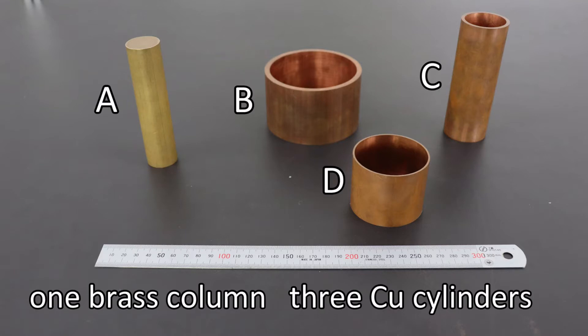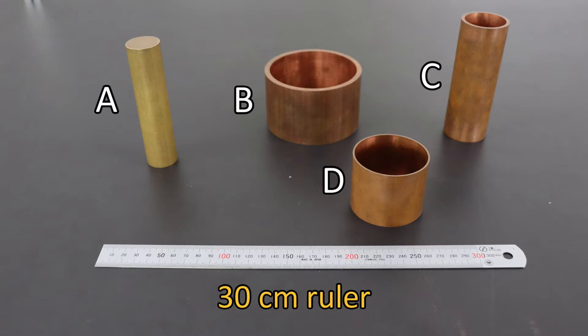First, we will measure the length and weight of one brass column, A, and three copper cylinders, B, C and D, in the picture. In the foreground is a 30 cm ruler, which should give you an idea of the size of the column and cylinders.